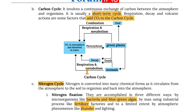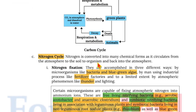Moving on to the carbon cycle, it involves a continuous exchange of carbon between the atmosphere and organisms. It is usually a short-term cycle. Respiration, decay, and volcanic actions are some of the factors that add carbon dioxide to the carbon cycle. The major reactions involved are combustion, respiration, metabolism, and photosynthesis, and that would complete the carbon cycle.